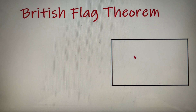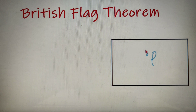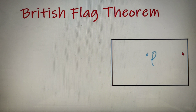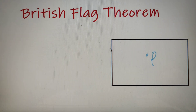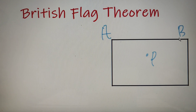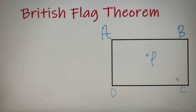According to the British flag theorem, if we have a point P inside the rectangle, then the sum of squares of the distances to two opposite vertices is equal to the sum of squares of the distances to the other two vertices. If we name the vertices of the rectangle as A, B, C, and D, then the sum of squares of the distances from A to P and P to C is equal to the sum of squares of distances from D to P and P to B.